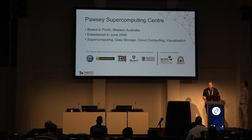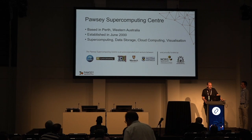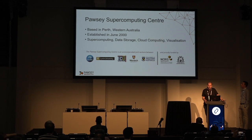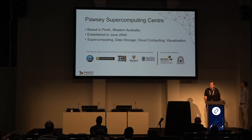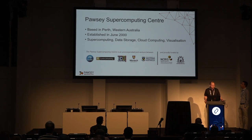Just a little bit about ourselves. Pawsey Supercomputing is based in Perth, Western Australia. We are a non-incorporated joint venture between CSIRO, the Federal Government Research Organisation, and four West Australian universities: Curtin, Edith Cowan, Murdoch, and UWA. We are also funded partly federally through NCRIS, the National Research Infrastructure for Australia Fund, as well as through the State Government of Western Australia. Originally established in June 2000.